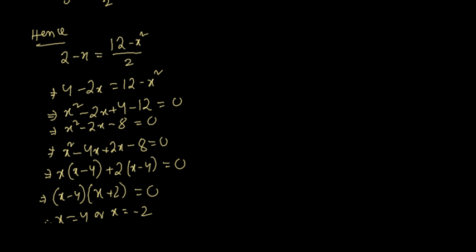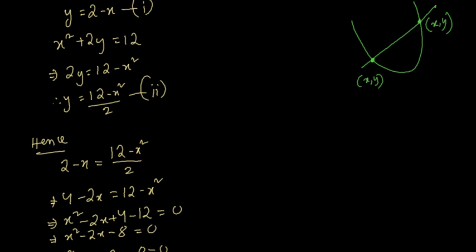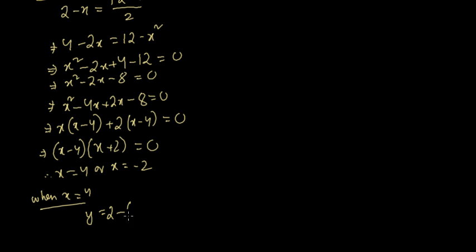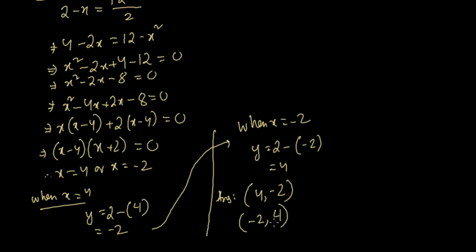The solution is not complete yet — we must also find the values of y. Using the easier equation y equals 2 minus x: when x equals 4, y equals 2 minus 4 equals minus 2; when x equals minus 2, y equals 2 minus (minus 2) equals 4. So the solutions are x equals 4 with y equals minus 2, and x equals minus 2 with y equals 4. This completes the simultaneous equations question.